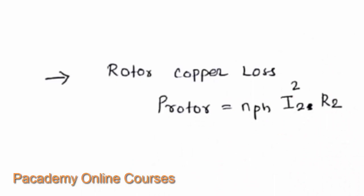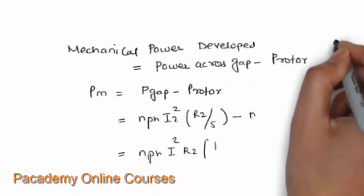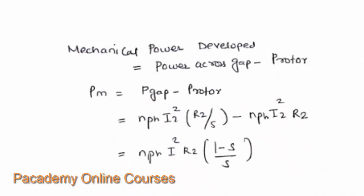The copper losses in the rotor of the induction machine can be written as nph × i2² × r2, where i2 is the rotor current and r2 is the rotor resistance. Some power has been transferred from the stator and is available at the rotor, but as the rotor carries current it will have copper losses. The total mechanical power developed — available at the shaft for useful work — equals the air gap power minus the rotor copper losses, which gives nph × i2² × r2 × (1 − s)/s.